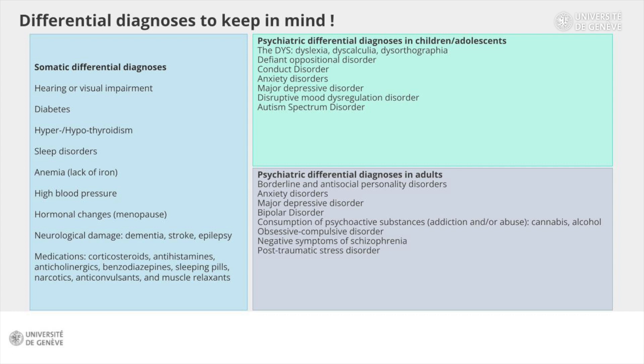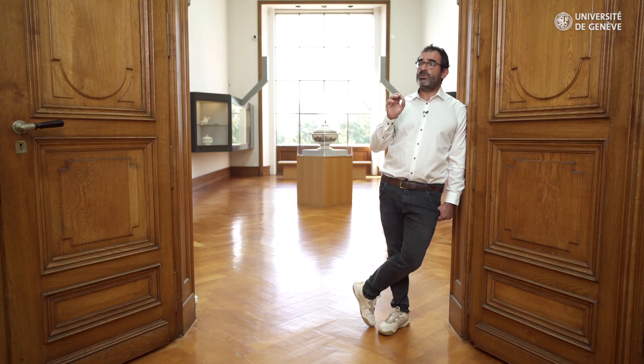In short, there are plenty of disorders — epilepsy, consequences of head trauma, stroke, high blood pressure — that can be pitfalls for the differential diagnosis of ADHD. And in case of doubt, it is always useful to see a specialist in order to exclude one or the other of these conditions. Finally, in the elderly, you should think about cognitive decline or the onset of dementia as possible differential diagnoses.